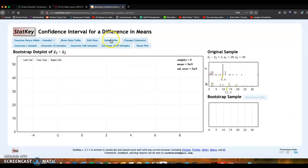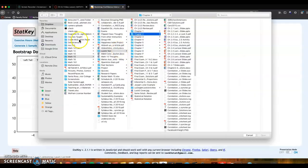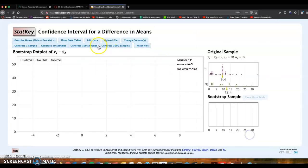There we go. You'd have to edit the data, enter in your data or upload it as a file for means. That's why we've been focusing on proportions because you don't have to upload, you just enter the data. But the idea is still the same. This is for exercise hours between male and female.